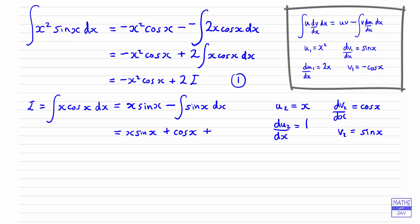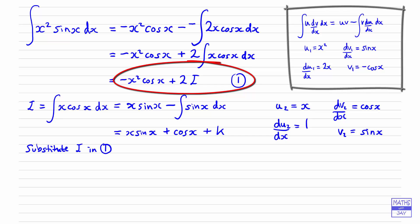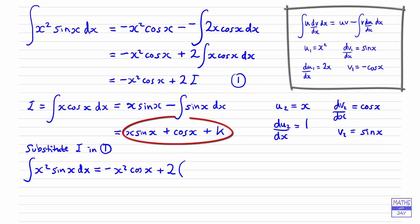We need to remember to add a constant of integration, so let's call that k. We haven't yet finished, but we can see it's going to be simple to find the answer now we've finished our actual integrating, because we know the integral we want is minus x squared cos x plus 2I, and we've just found I and can substitute it in. So we've got the integral equal to minus x squared cos x plus 2 times I — which is x sin x plus cos x — not forgetting the constant of integration k.